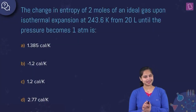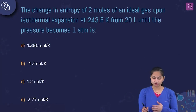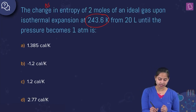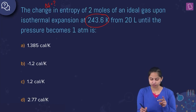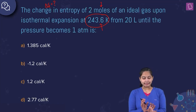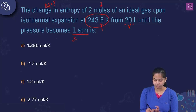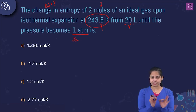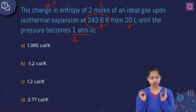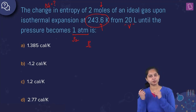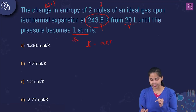We need to calculate the change in entropy (ΔS) for two moles of an ideal gas undergoing isothermal expansion at a temperature of 243.6 K, from a volume of 20 liters until the pressure becomes 1 atm (P2 = 1 atm). We'll first calculate the initial pressure P1 using the ideal gas equation: P1 = nRT/V1.